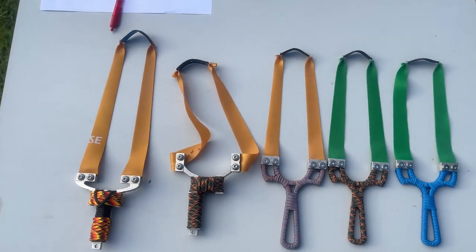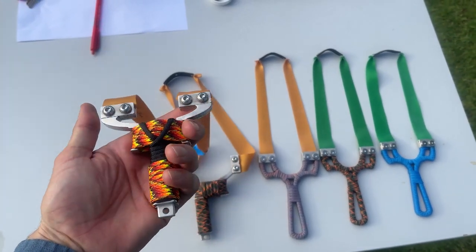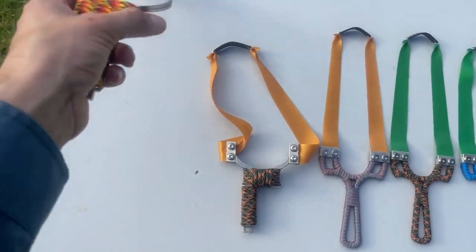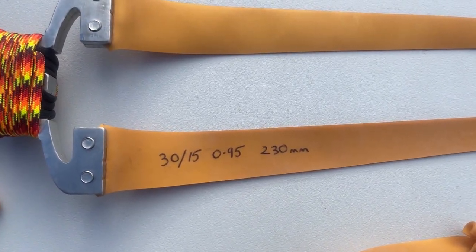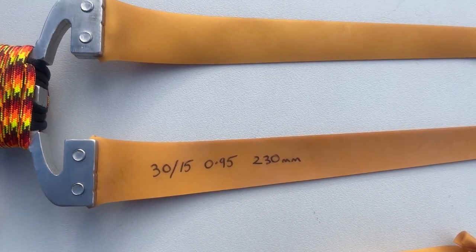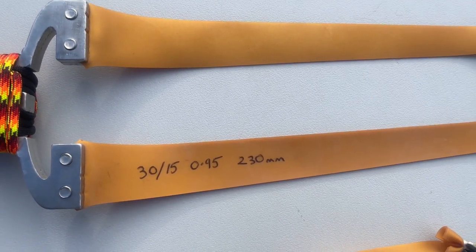Okay, here are the slingshots and the bands I'm going to be using today. We've got the Demon and the Demon is going to be shooting 30 to 15 taper, 0.95 Precise Gold, and the active band length is 230 millimeters.